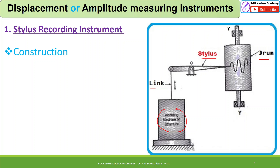From successive amplitude readings, the logarithmic decrement of amplitude can be observed. This logarithmic decrement further gives the damping factor and the damping circular frequency of vibrations. This makes it a very cheap and simple instrument.